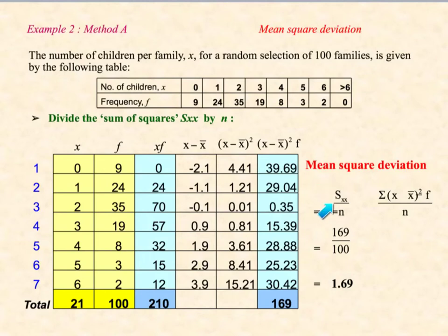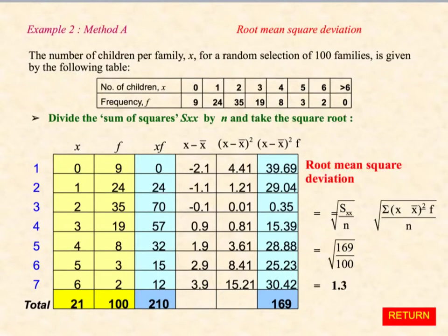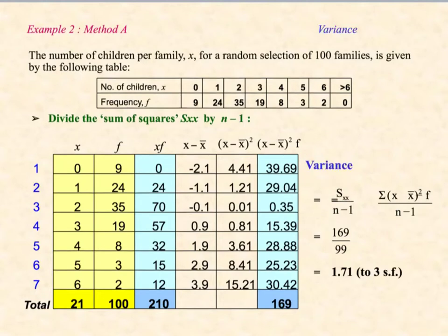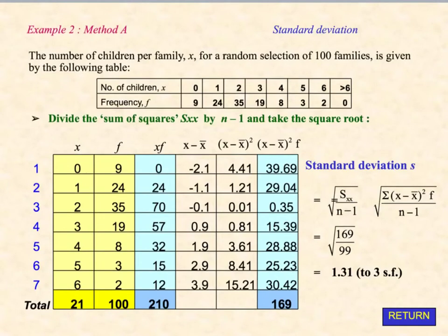Once we have SXX, we simply divide it by N and that gives us the mean squared deviation. If we then take the square root, it gives us the root mean squared deviation. If we take SXX and divide it by N minus 1, it gives us the variance, and then if we square root the variance, it gives us the standard deviation. This was done using Method A.